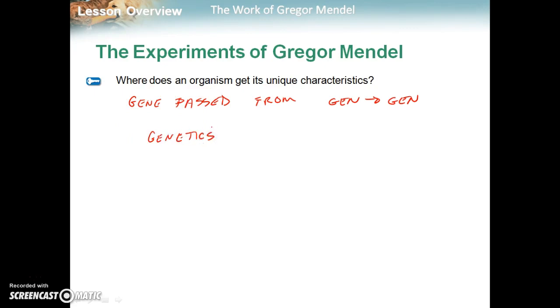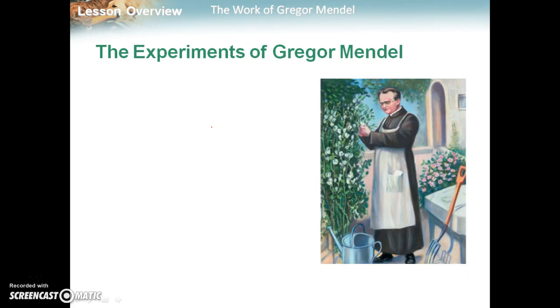So Gregor Mendel, an Austrian monk, was the father of genetics. He worked with pea plants because they were a good model for looking at different traits. They were fairly simple, they were small so they were easy to work with, they reproduced quickly, and they reproduced a lot of offspring in one season.